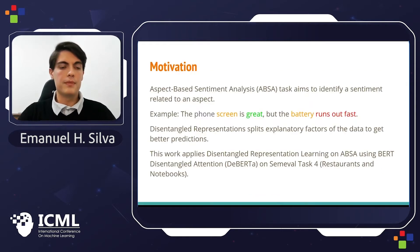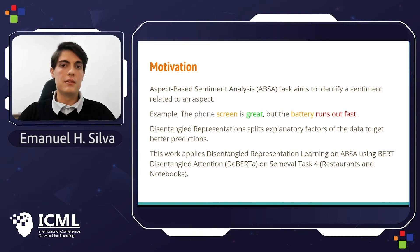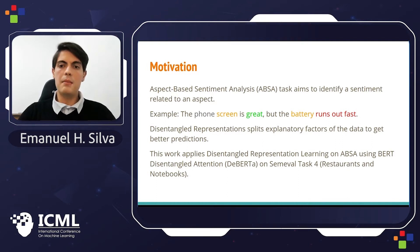For motivation, Aspect-Based Sentiment Analysis, or ABSA for short, is a task that aims to identify sentiment related to an aspect. For example, 'the phone screen is great but the battery runs out fast.' In this example, the phone screen is a great aspect of the product and the battery is a bad aspect.